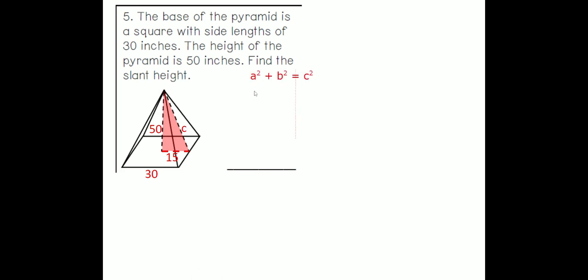So if you set it up, you should get something that looks like this. 50 squared plus 15 squared equals C squared or 15 squared plus 50 squared equals C squared. Either one is correct. 50 squared is 2,500. 15 squared is 225. Add those two up. We get 2,725. Square root it. And we should get a slant height of 52.2 inches.